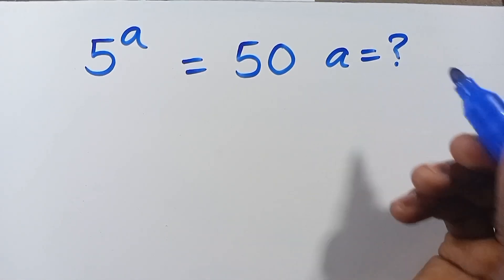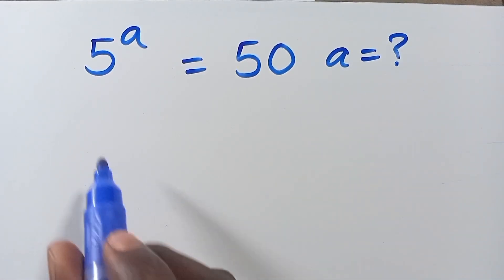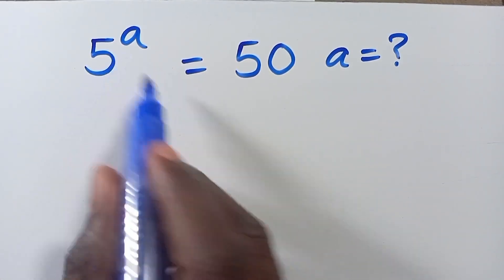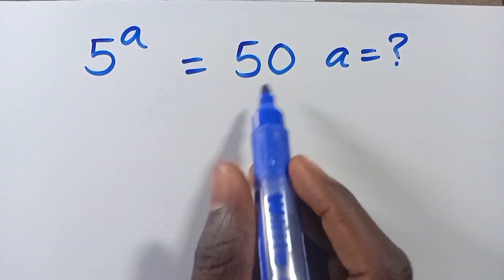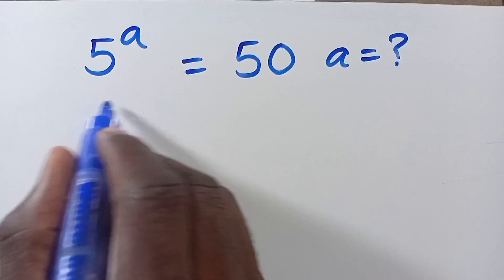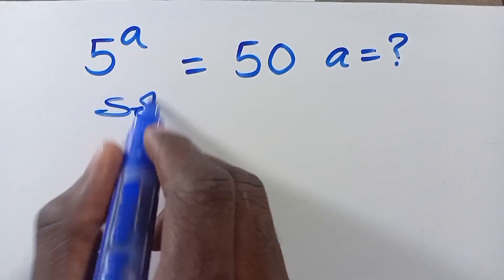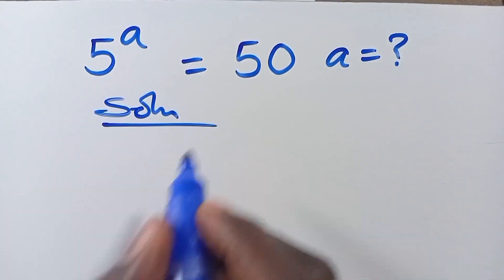What is the value of A? Given that you have 5 to the power of A equals 50, let's find the solution from here.